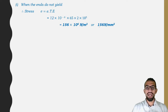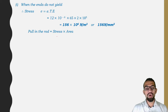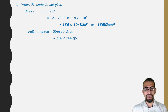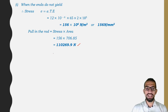Pull in the rod = stress × area = 156 × 706.85 = 110,269.9 N. That is the pull in the rod — this is the force P.